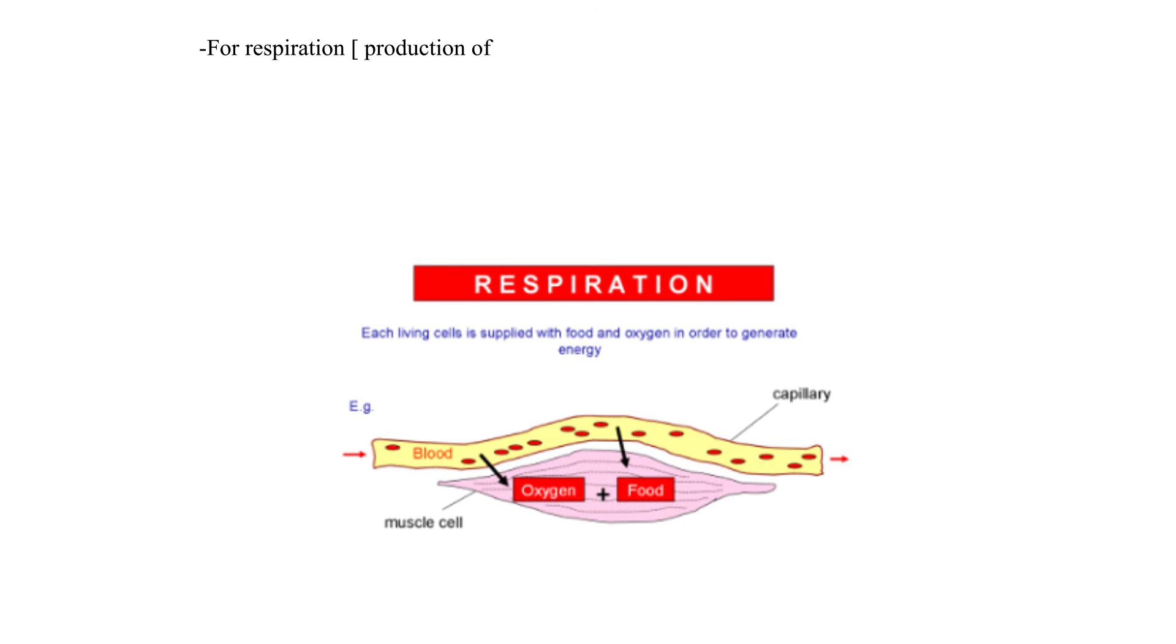For respiration production of energy to take place there must be a food substrate such as glucose and oxygen which are taken to the mitochondrion.